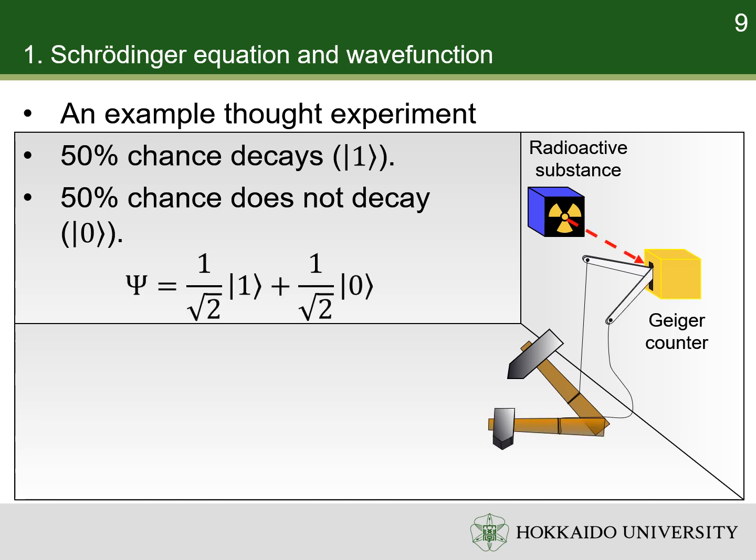Thus, a description of the radioactive material after one hour becomes a blur of the decayed and not decayed states, both are eigenstates of the system. Since they have the same probability, their coefficients are both 1 over square root of 2.